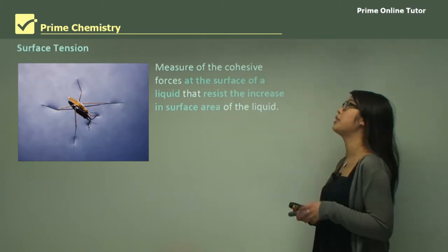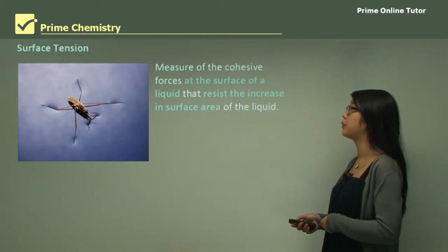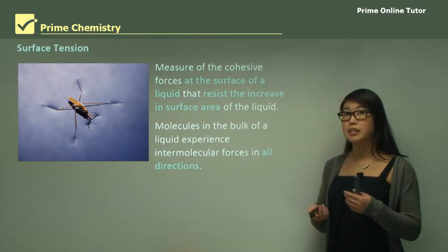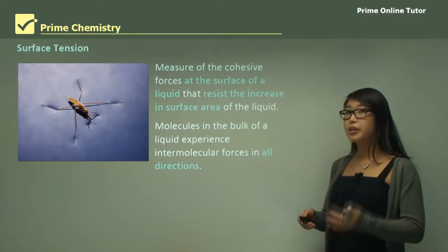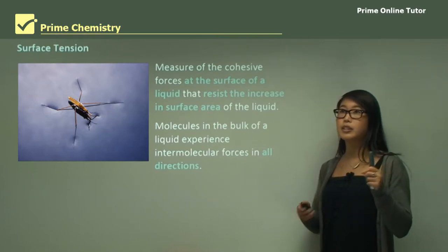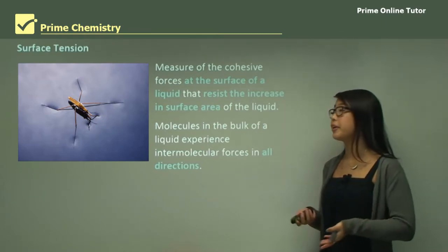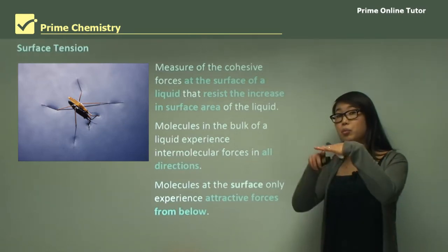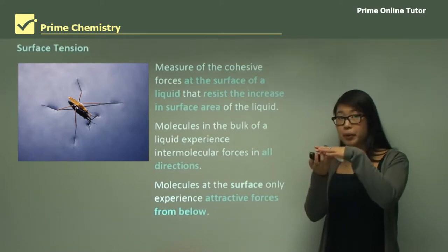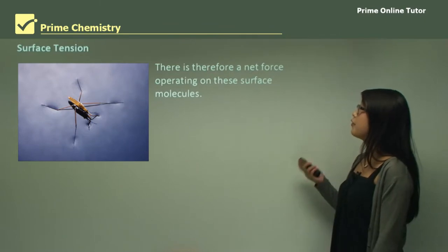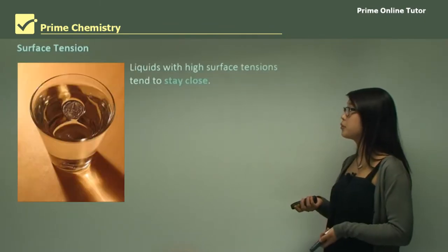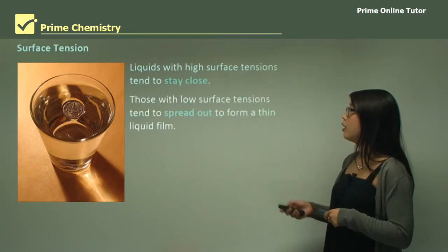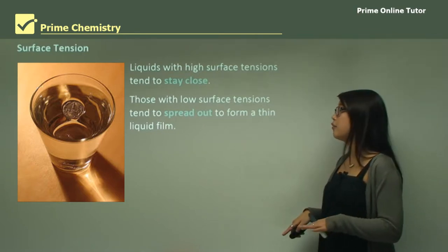Surface tension is a measure of cohesive forces at the surface of a liquid, and it resists the increase in surface area. Molecules in the bulk of a liquid experience intermolecular forces in all directions, but molecules at the surface only experience attractive forces from below — there's only water at the bottom and gas at the top. Therefore there's a net downward force on surface molecules. Liquids with high surface tension tend to stay close together; those with low surface tension tend to spread out and form a thin film.